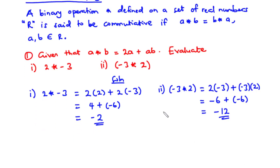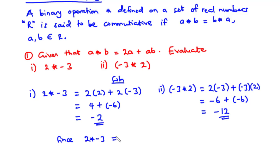Now we said earlier that for a binary operation to be commutative, A star B should be equal to B star A. Notice here that 2 star negative 3 is negative 2, and negative 3 star 2 is negative 12. So since 2 star negative 3 is not equal to negative 3 star 2, it follows that the binary operation star is not commutative.